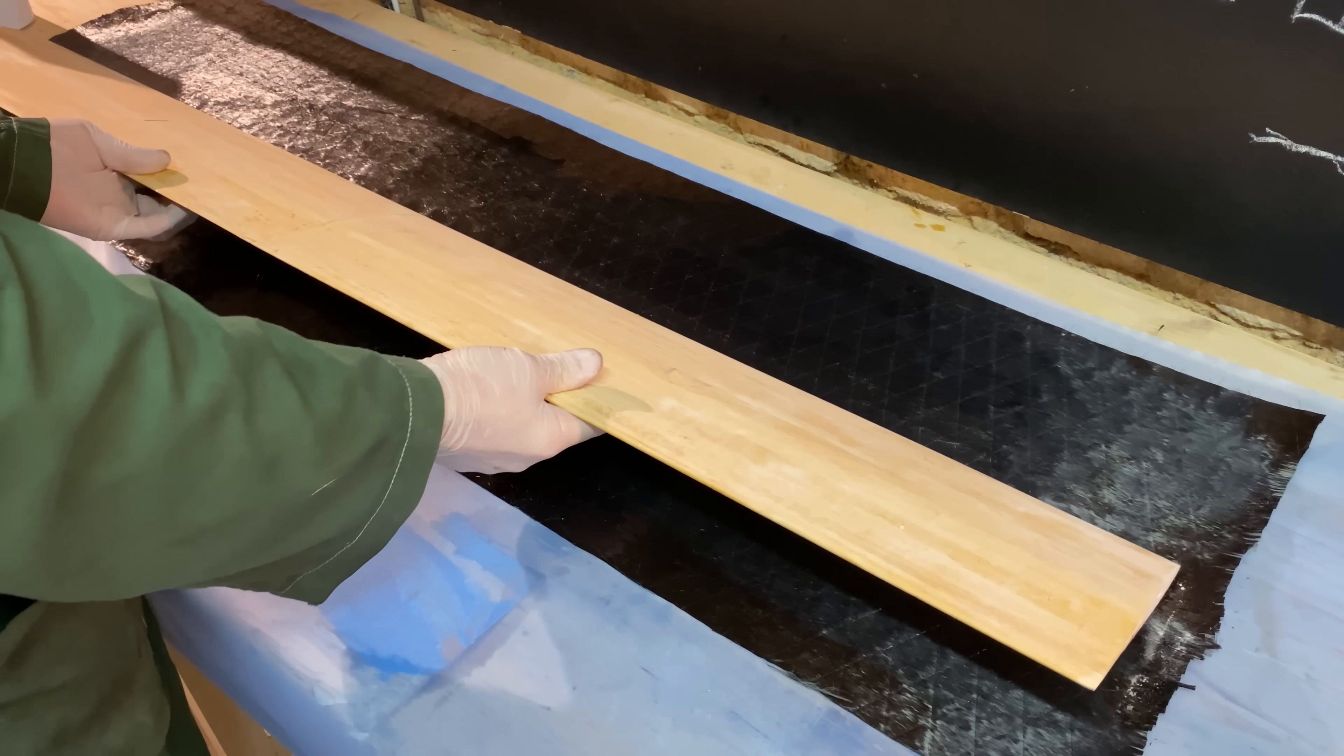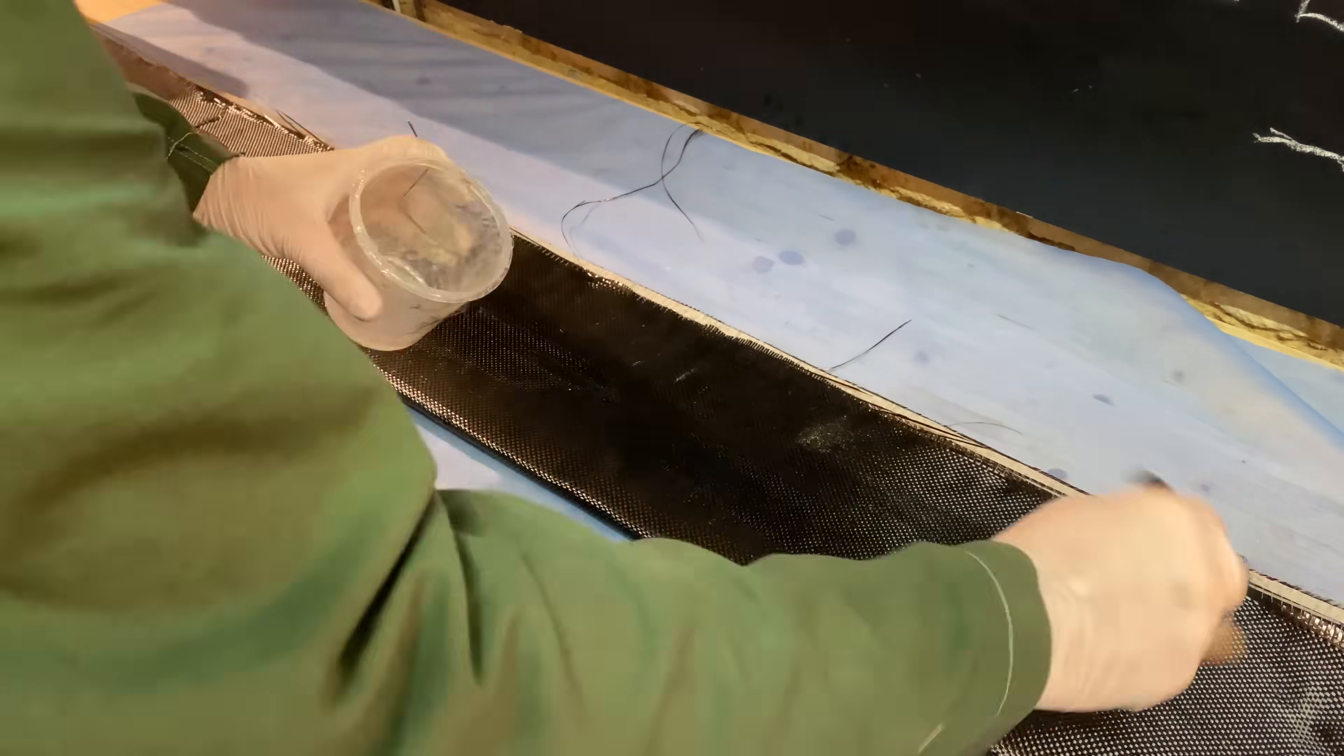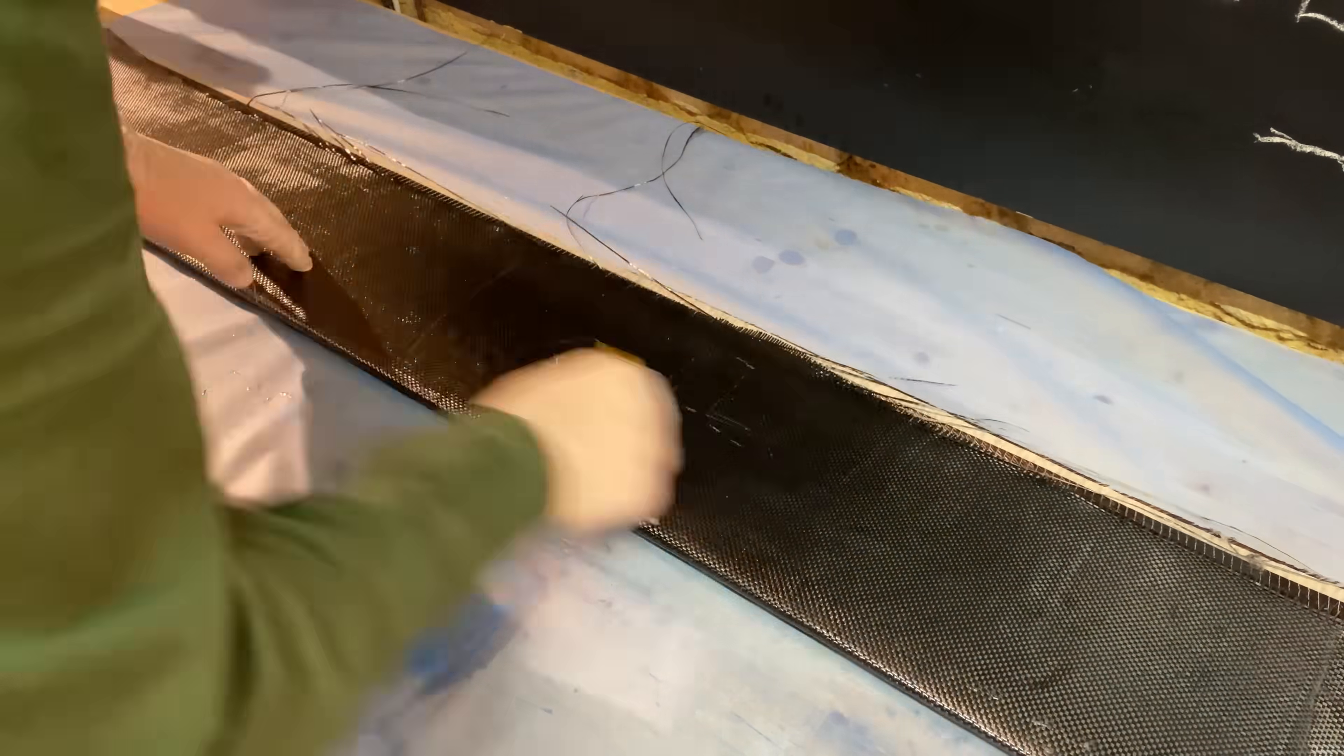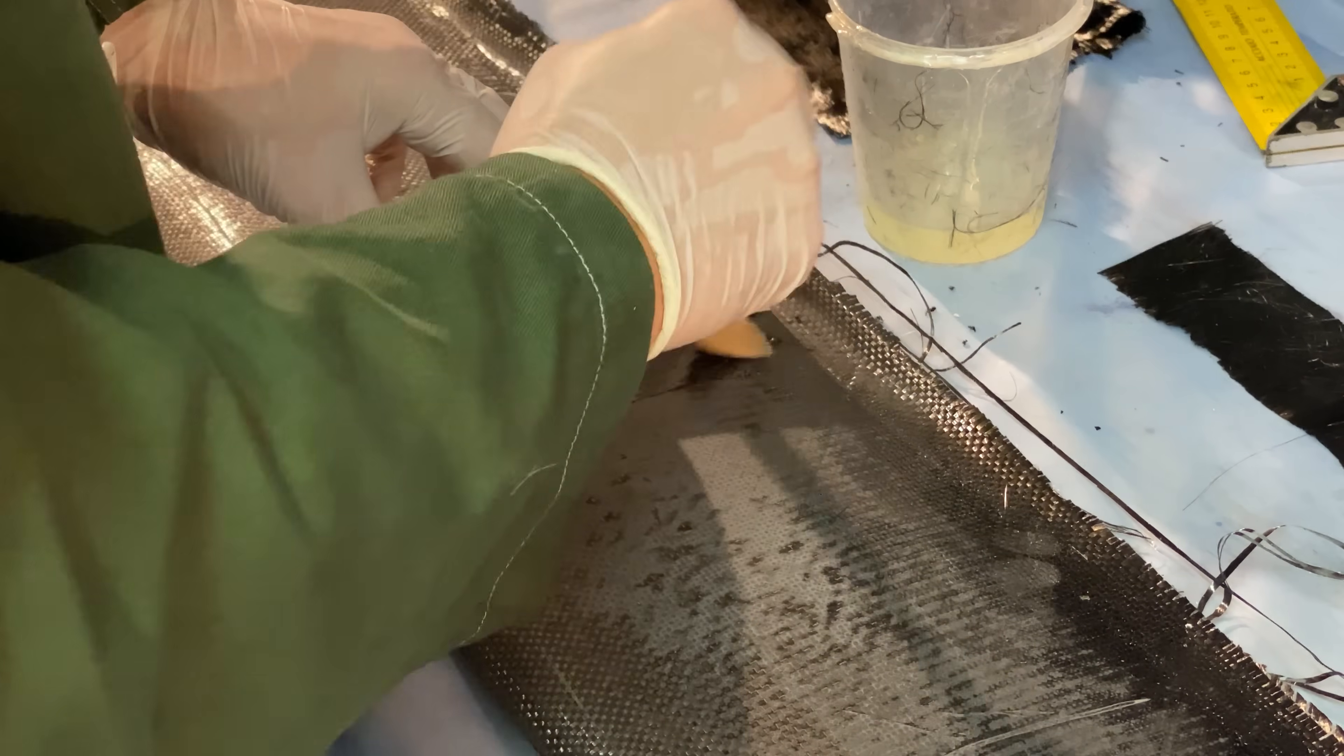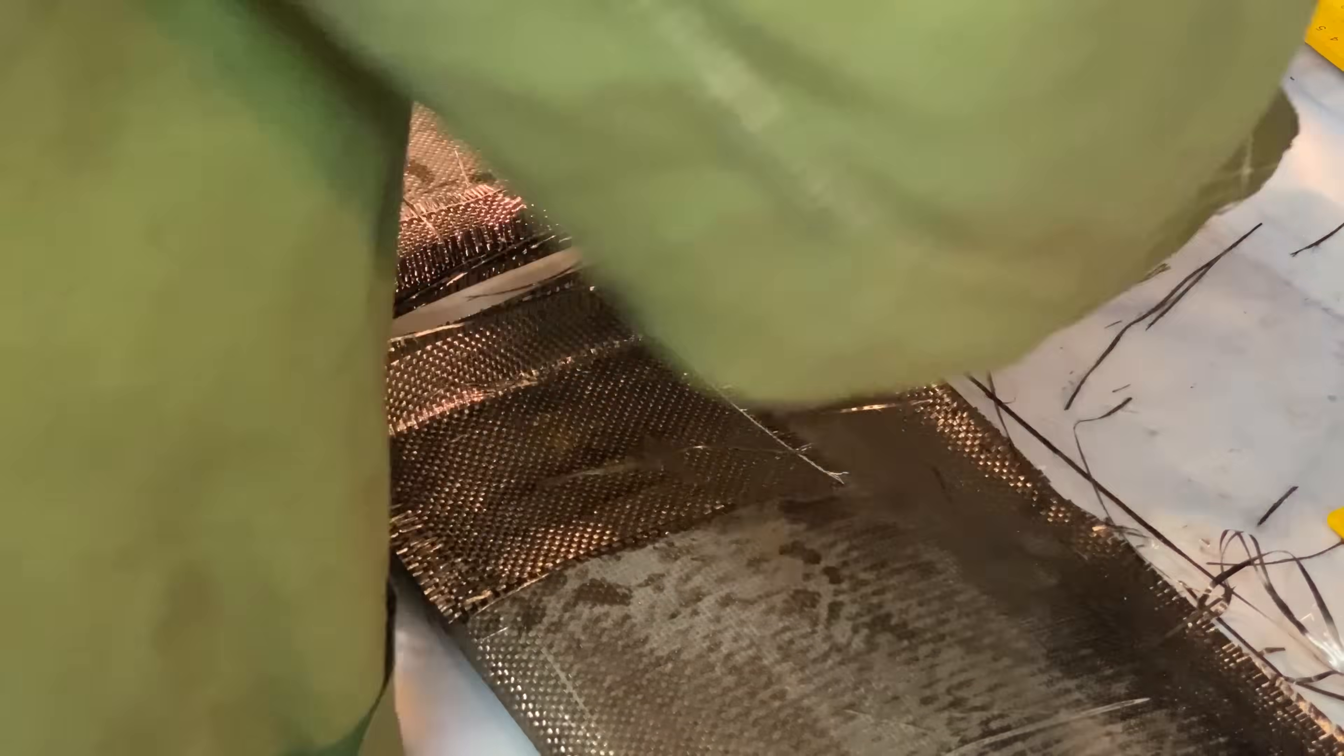Then, the same procedure is done for the daggerboard and also for the main foil. A slot for the main foil is created with carbon and a mold inside. In this first try, the whole wing rotates, I'll do a next iteration with a flap built in the foil.